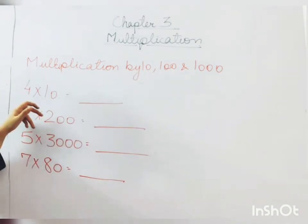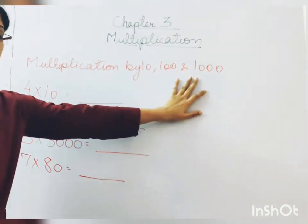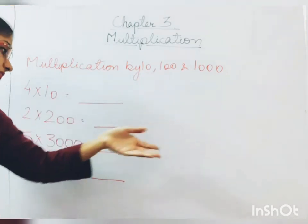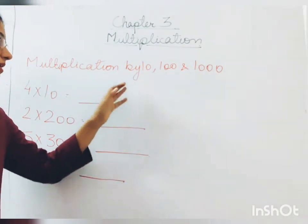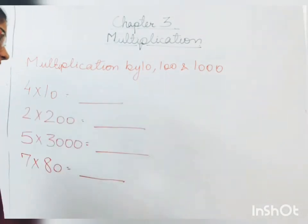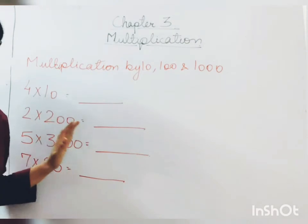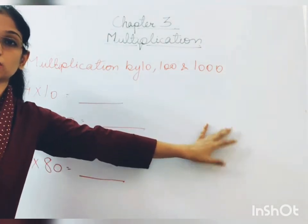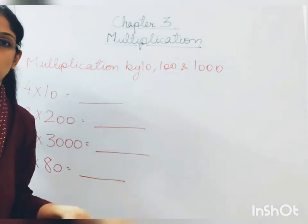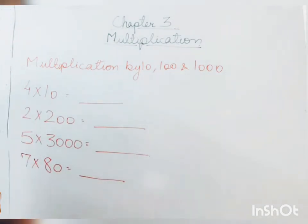Whenever we multiply a number by 10, 100 or 1000, or by any of the multiples of 10, 100 or 1000, say 200, 3000, 80, these are all multiples of 10, 100 and 1000, right? So what do we do in that case? Do we have to do the proper long multiplication? No, there is an easy way out. So let's have a look at what it is.